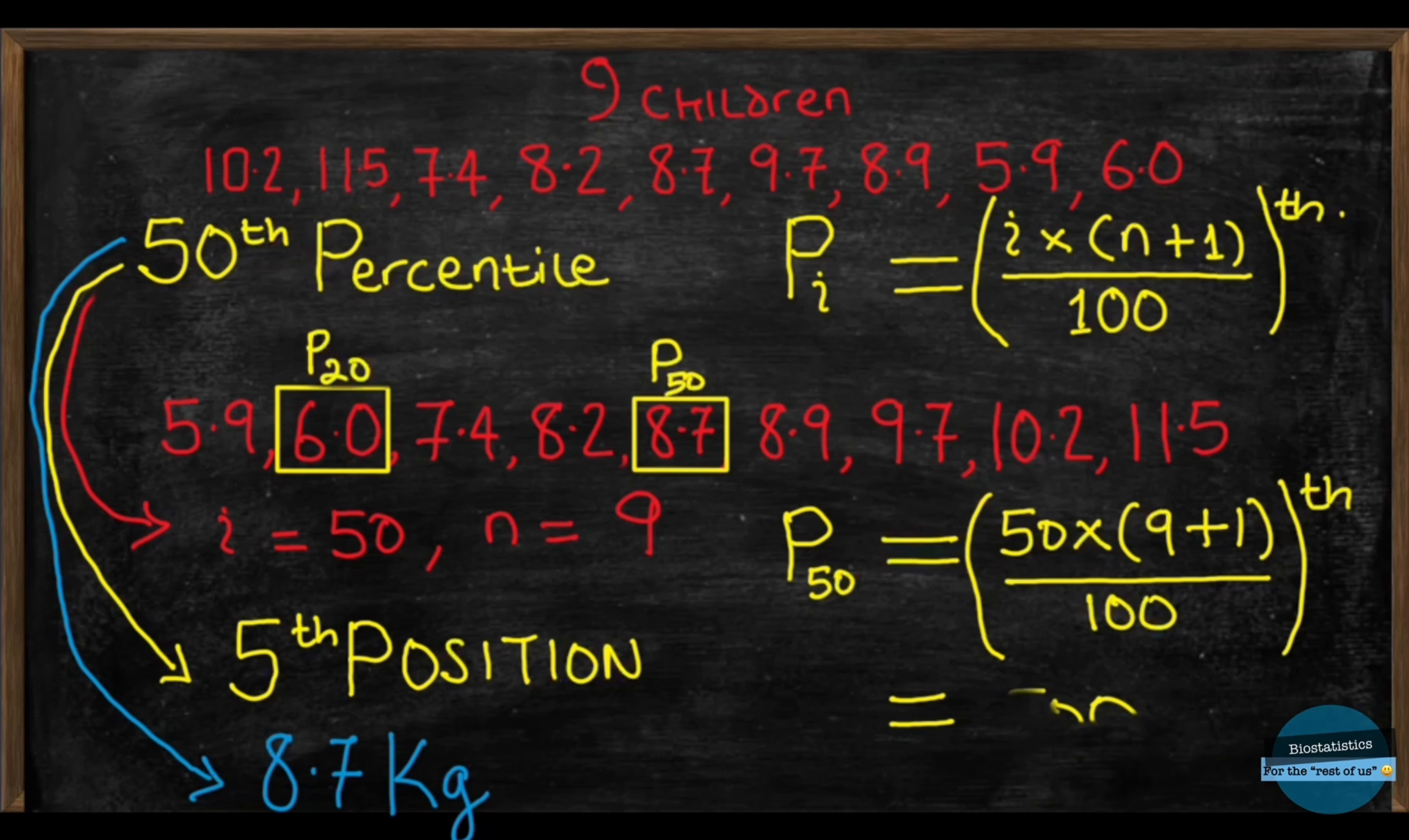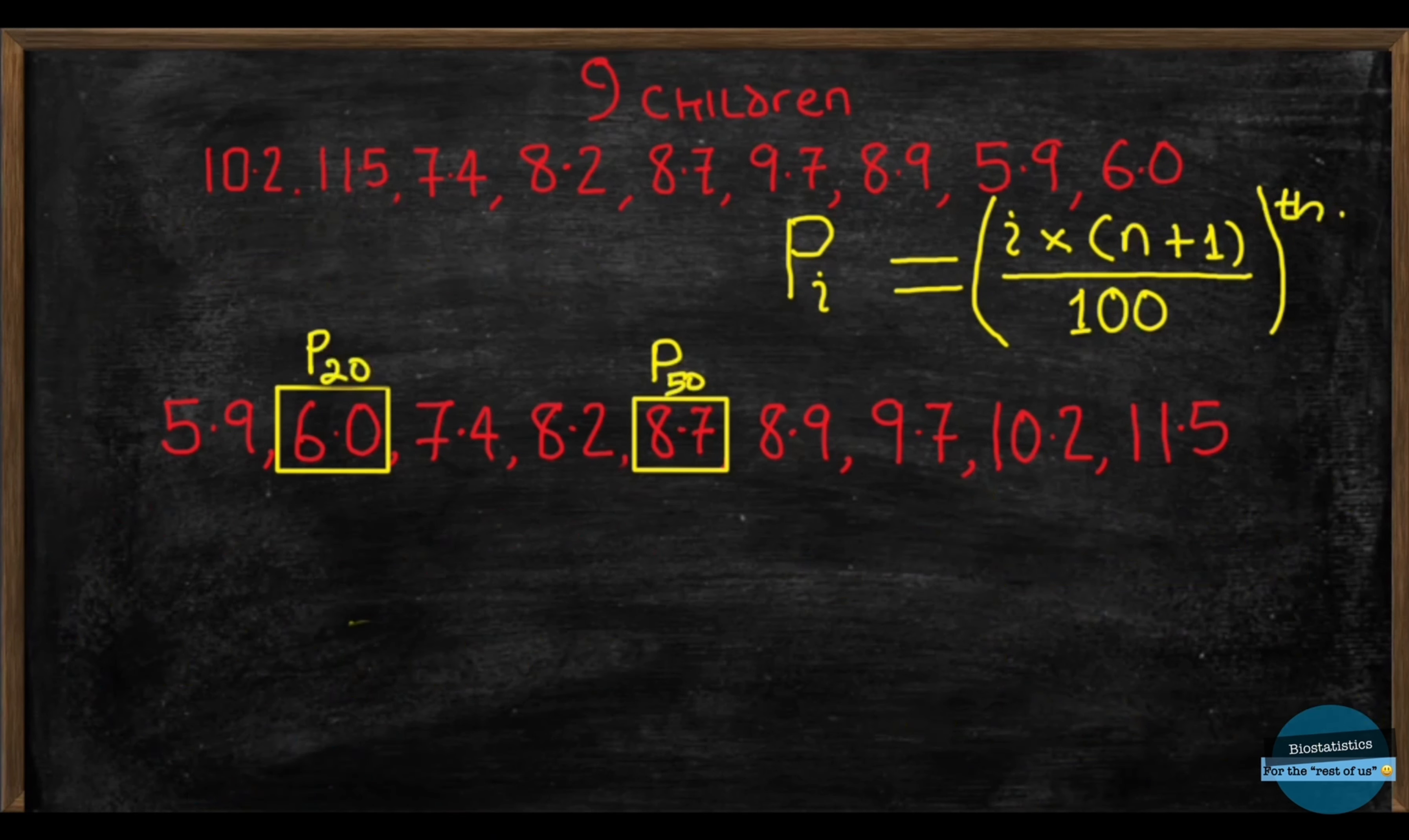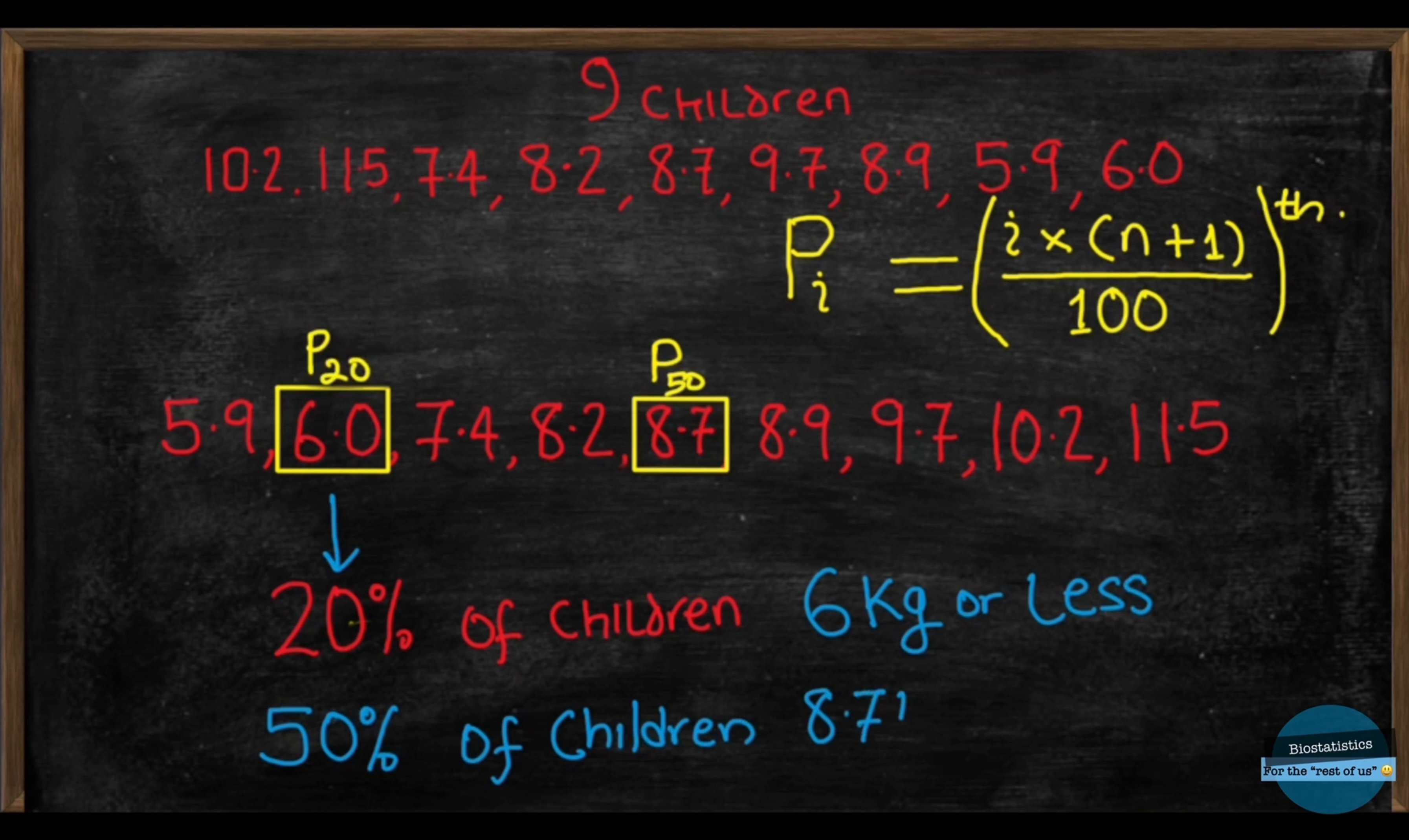So, how do we interpret our percentiles in the context of our data? For the 20th percentile, what this simply means is that 20% of the children were 60 kg or less and for the 50th percentile, this means 50% of the children in the sample were 82 kg or less and you can see this when you look at the sorted data. So, percentiles give us an idea of the distribution of the data.